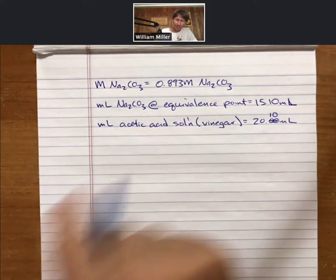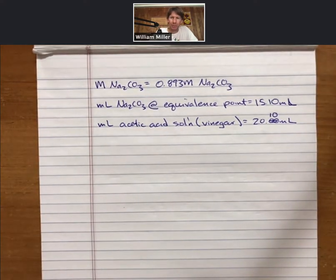And my acetic acid solution, my vinegar that I used, I used 10 amounts of 2 milliliters, which for me each one was 2.01, so that amounts to 20.10 milliliters.